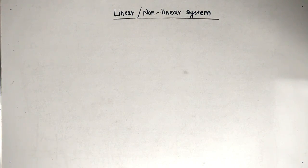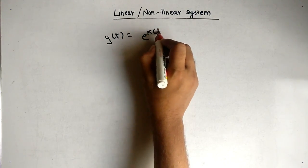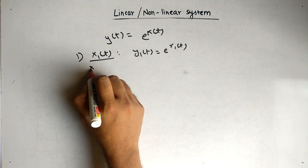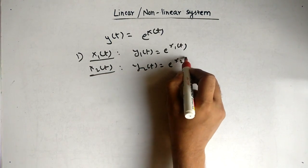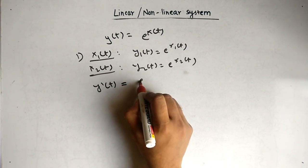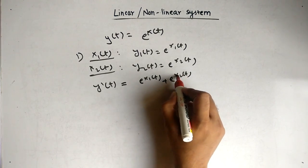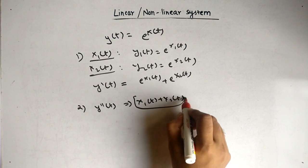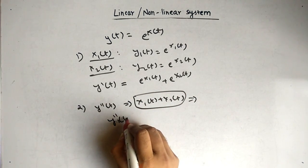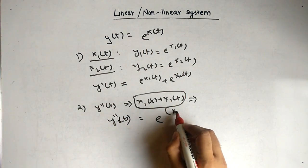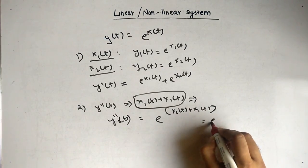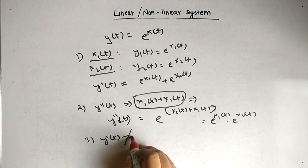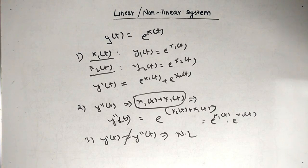Last important example: y of t equals e raised to x of t. For x1(t) as input, y1(t) = e^(x1(t)). For x2(t), y2(t) = e^(x2(t)). So y-dash of t equals e^(x1(t)) plus e^(x2(t)). For y-double-dash of t, input is x1(t) plus x2(t), so y-double-dash of t equals e^(x1(t) + x2(t)), which equals e^(x1(t)) times e^(x2(t)). You can see y-dash of t is not equal to y-double-dash of t, so this system is nonlinear.